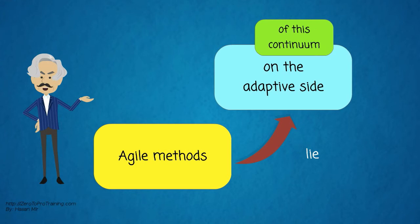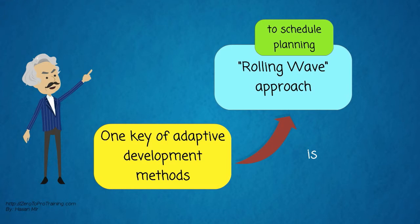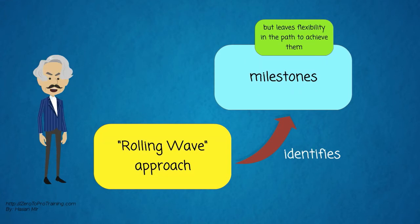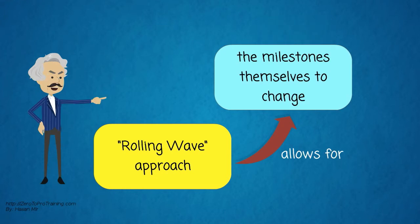Agile methods lie on the adaptive side of this continuum. One key of adaptive development methods is a rolling wave approach to schedule planning. It identifies milestones but leaves flexibility in the path to achieve them, and also allows for the milestones themselves to change.